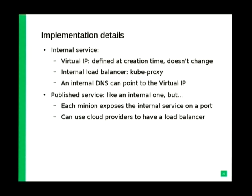There is an internal load balancer running on each node — kubeproxy — which uses iptables to route connections to the right pod providing the service. For published services, each minion exposes the service on a fixed port, so you just point your load balancers to all nodes on that port. If you're running Kubernetes on a public cloud like AWS, there are already implemented backends so you can reuse AWS load balancers and don't have to maintain that part of the infrastructure.